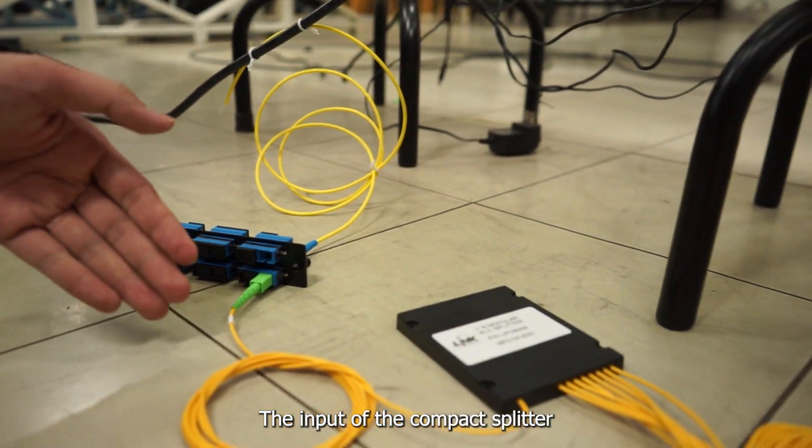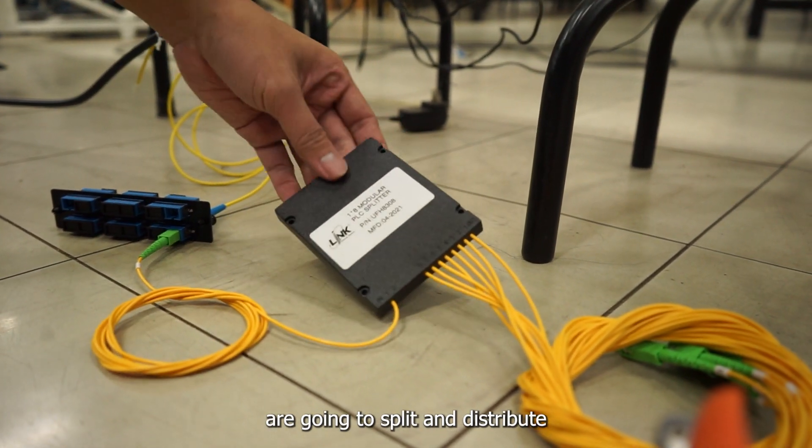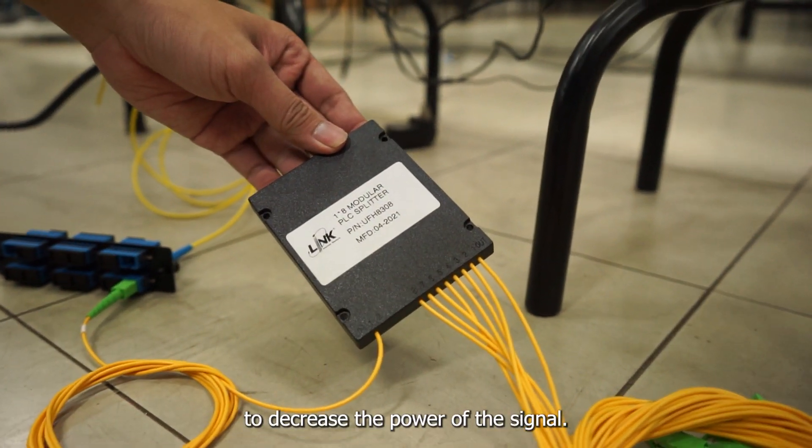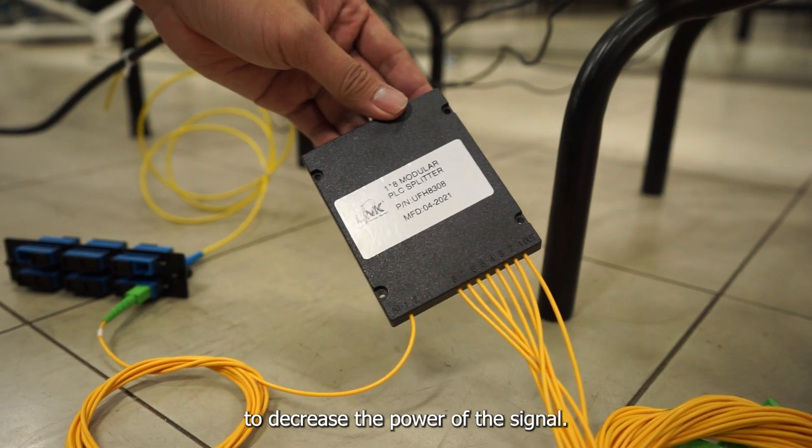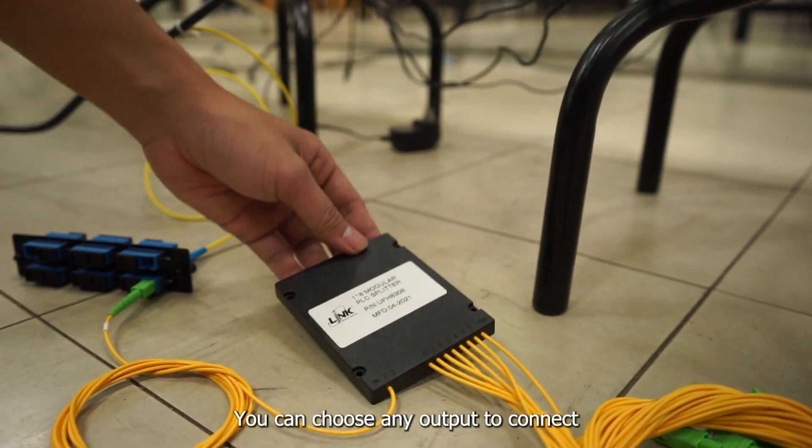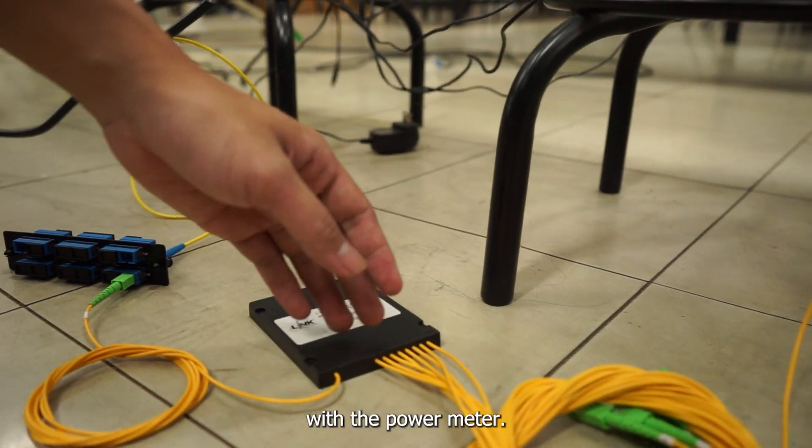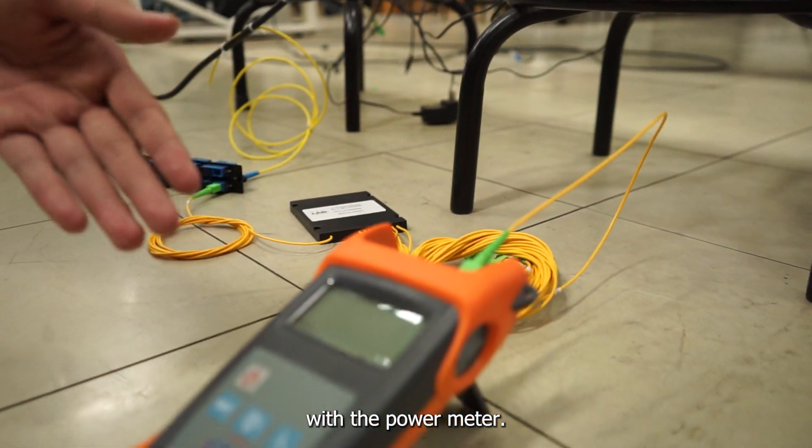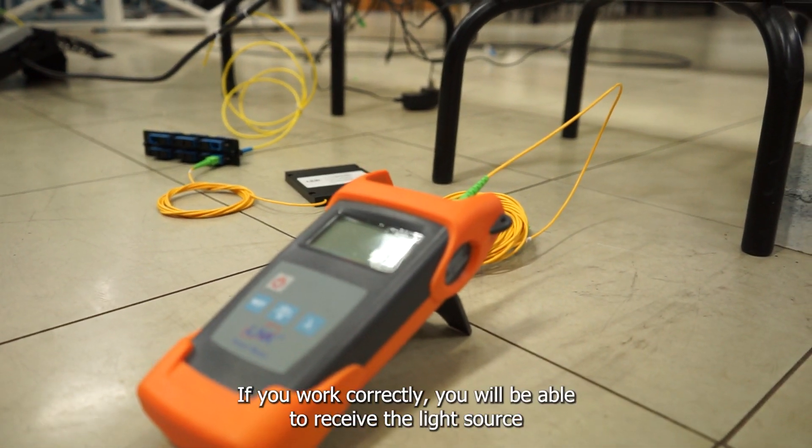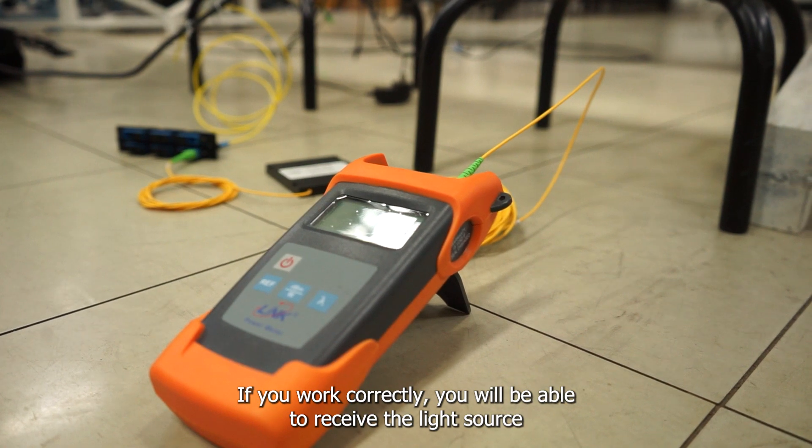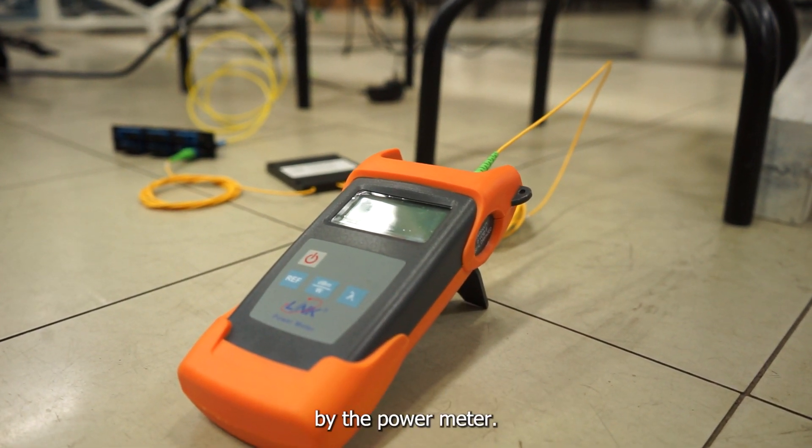The compact splitter input splits and distributes the signal, decreasing its power. You can choose any output to connect with the power meter. If done correctly, the power meter will receive the light source.